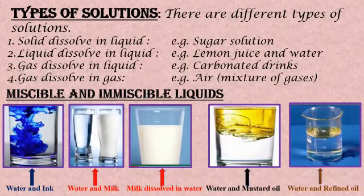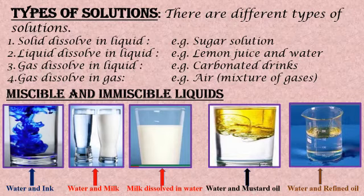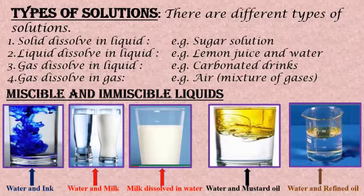Now we will learn about more types of solution. The first type is solid dissolves in liquid — when sugar dissolves in water, sugar solution is formed. The second type is liquid dissolves in liquid — when lemon juice dissolves in water, lemonade is formed.